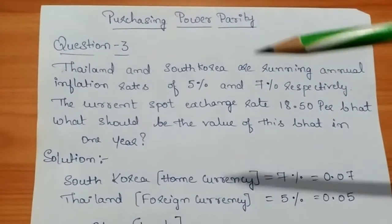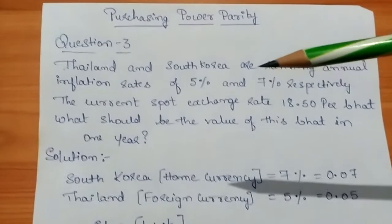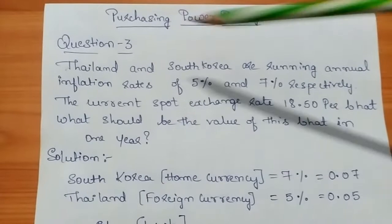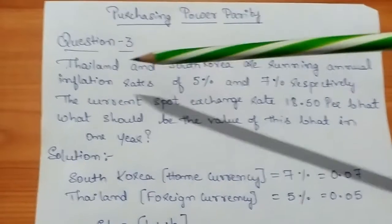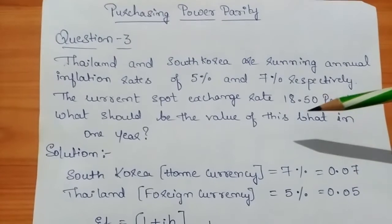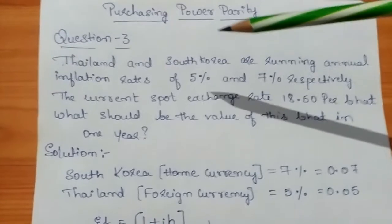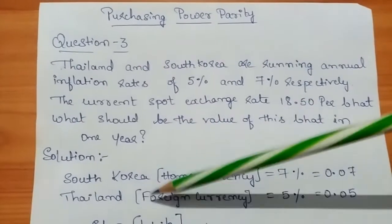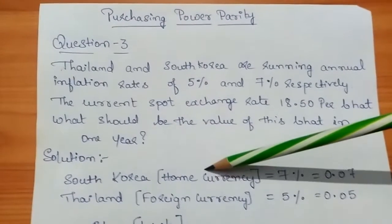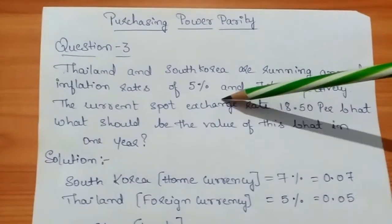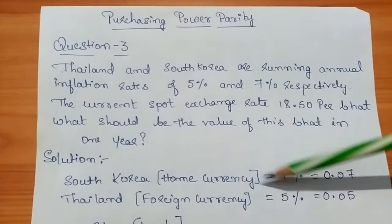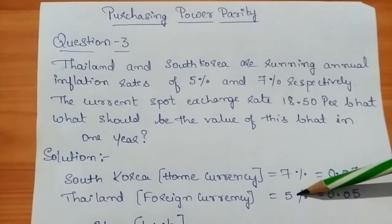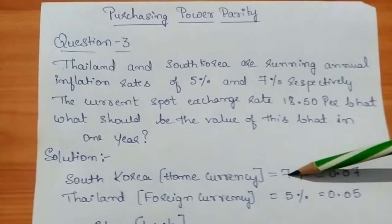Before solving, let's clarify which is the home currency and which is the foreign currency. The question asks about the Baht, which is Thailand's currency, so South Korea is the home currency and Thailand is the foreign currency. The home currency (South Korean WON) has a 7% inflation rate — that is 0.07 — and the foreign currency (Thai Baht) has a 5% inflation rate — that is 0.05.